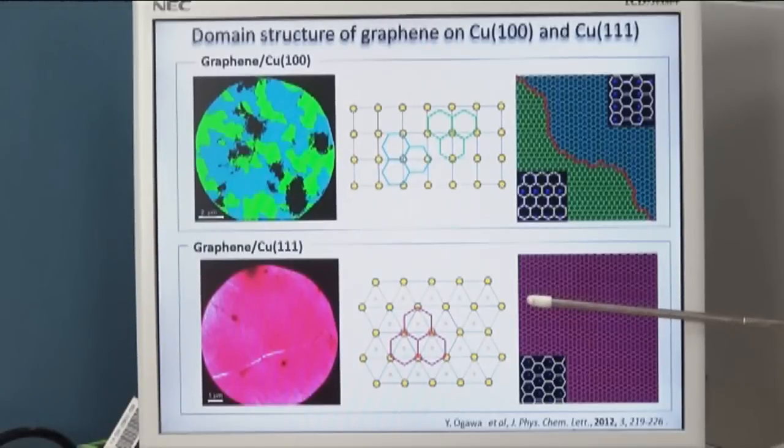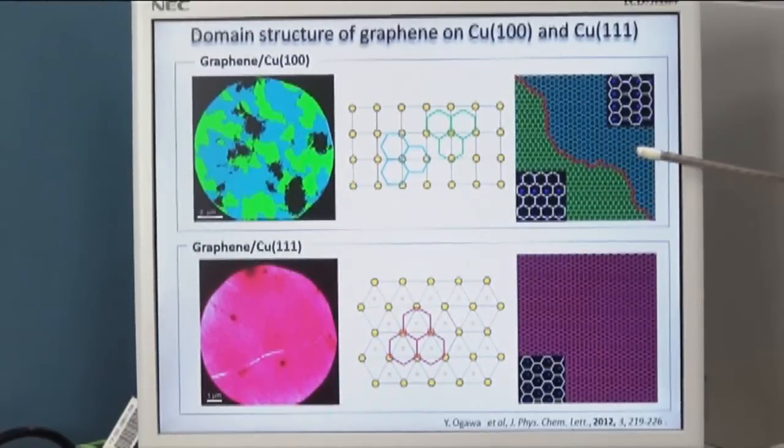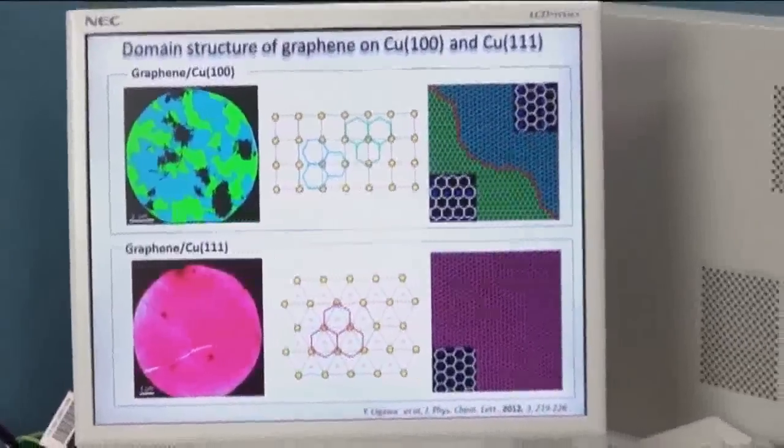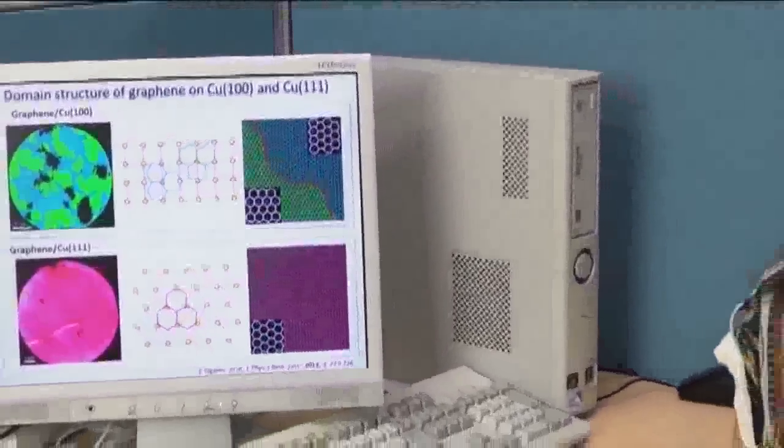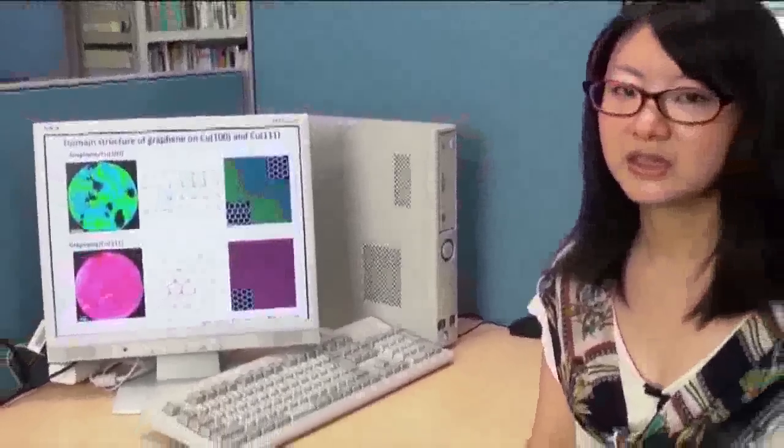Furthermore, when domains with different orientations meet, they should keep the domain boundary. So, our work highlights the importance of crystal plane on the development of single crystalline graphene.